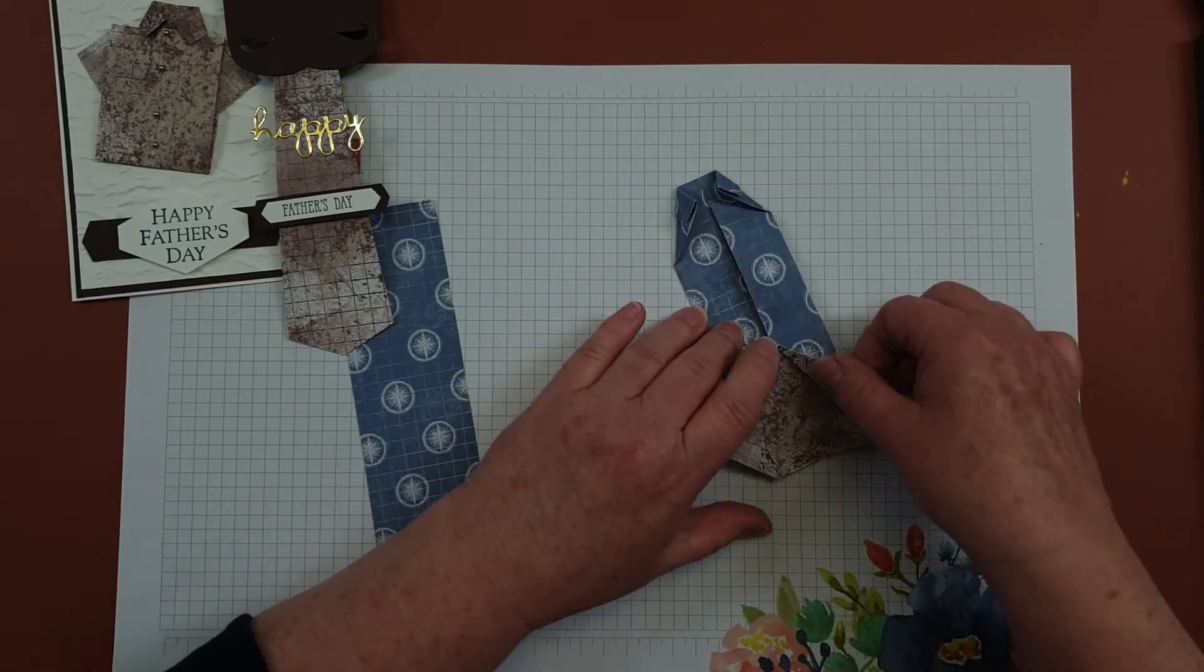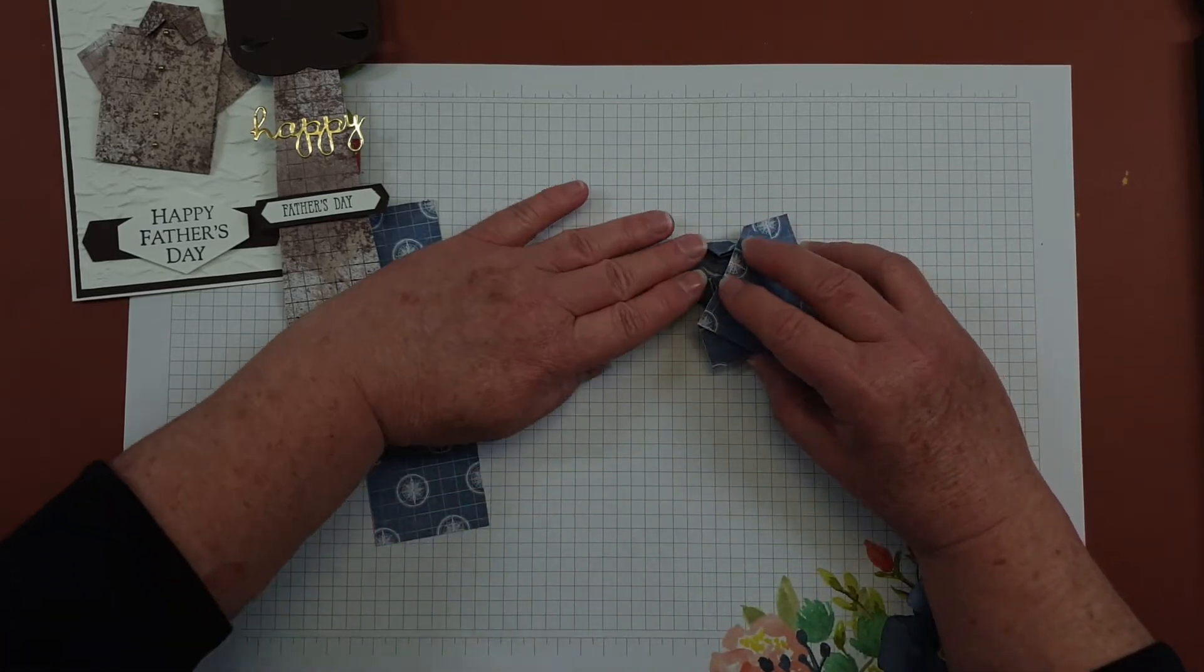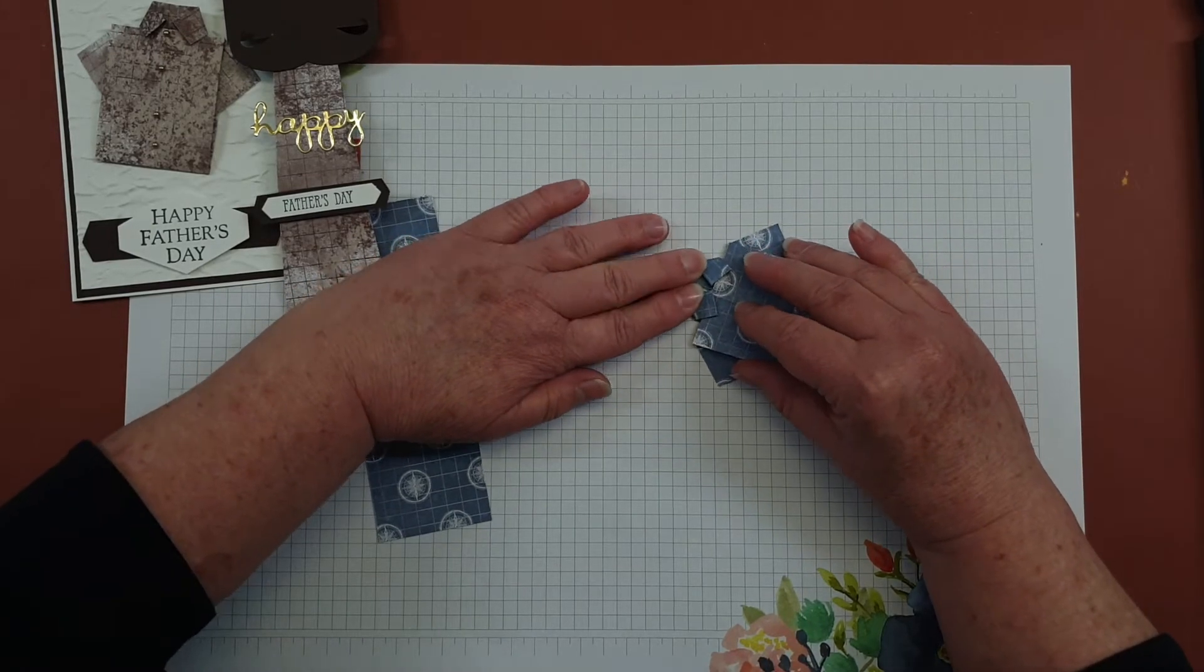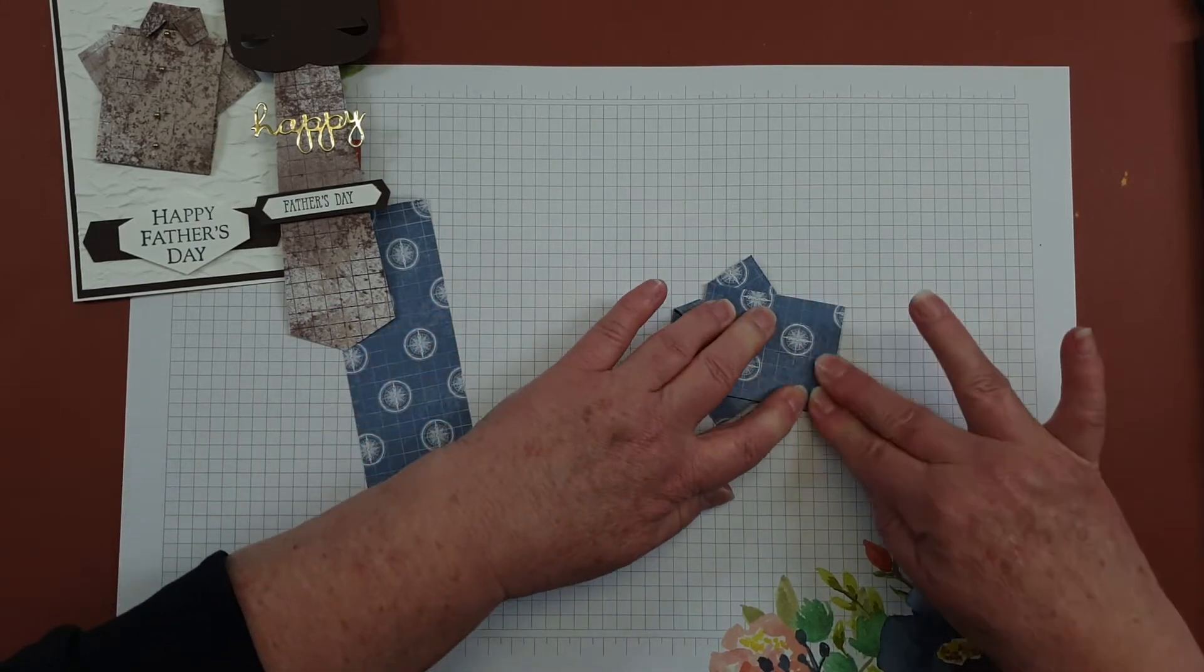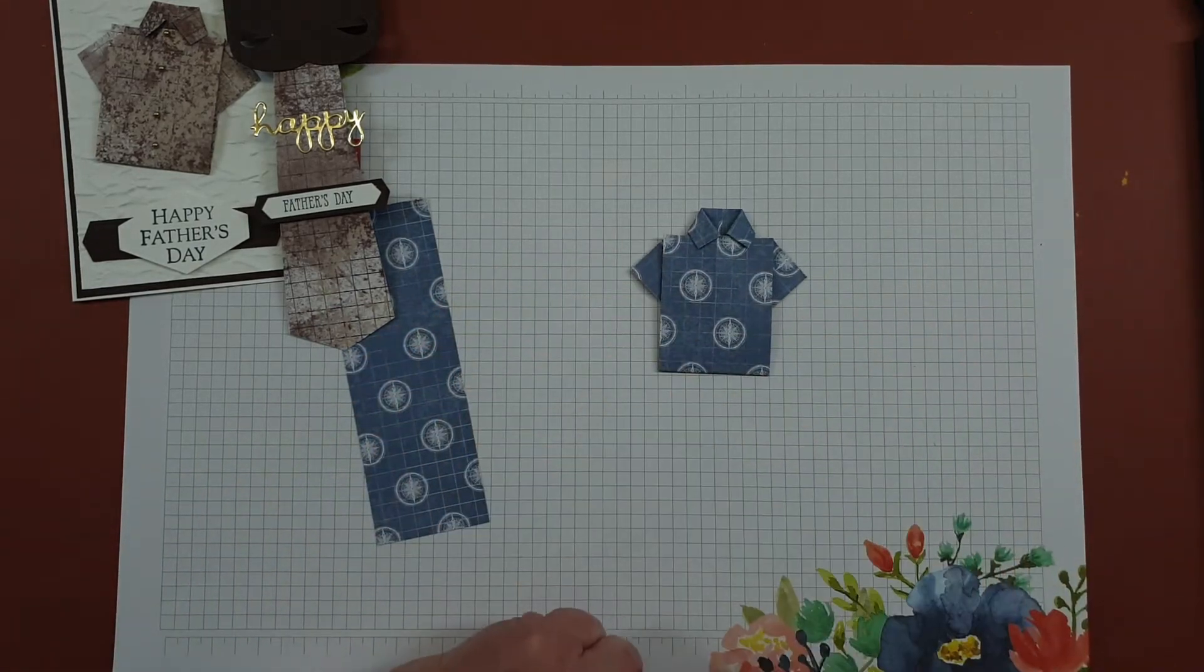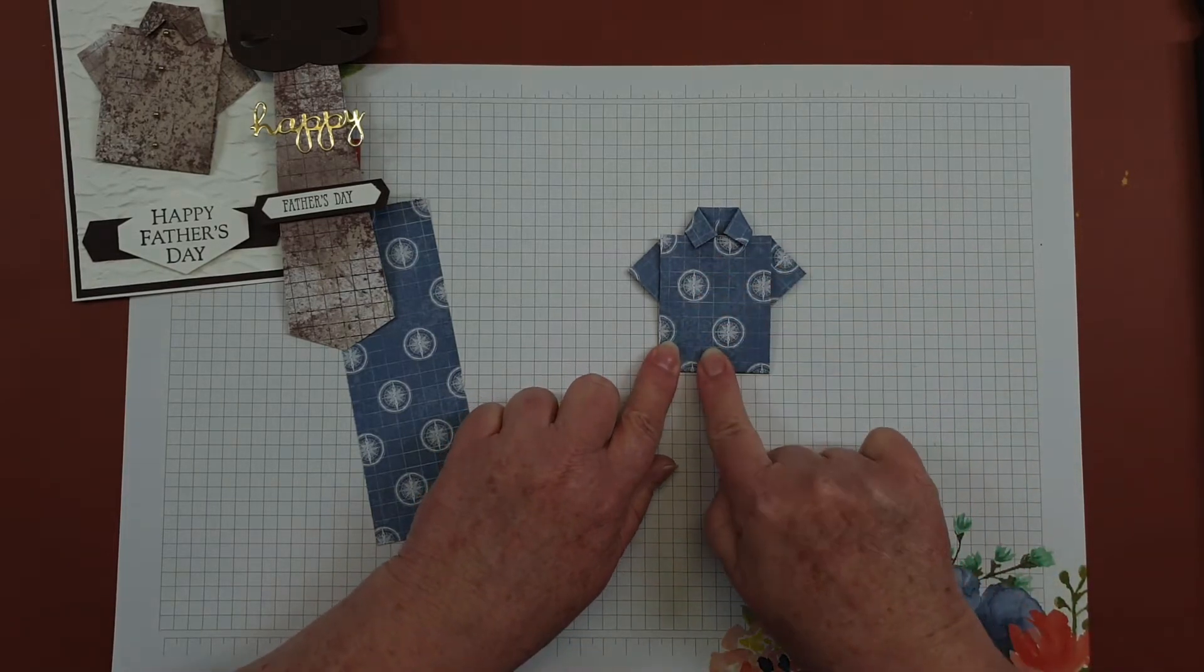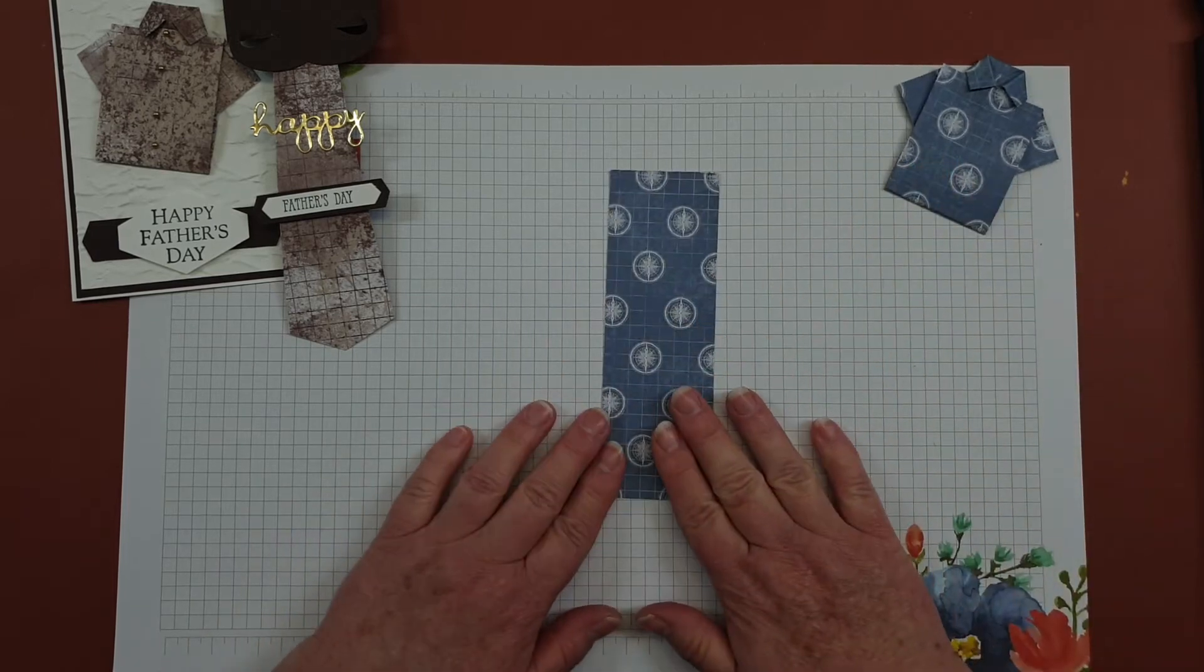Then we're going to fold that up, but before we push it down hard, we're going to get that to sit in underneath the two little points of the collar. Line up the edges and there you have your cute little shirt. You can finish it off with some bling down the center for the tie.